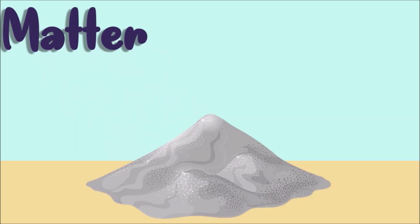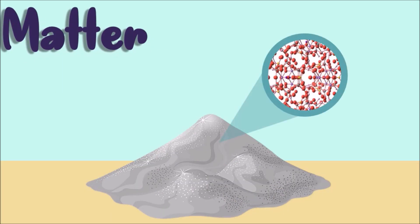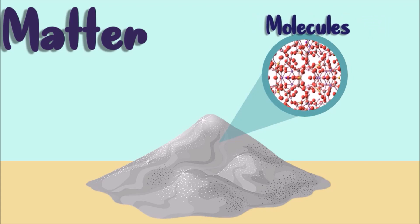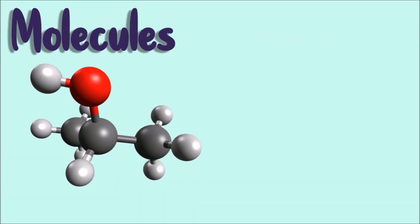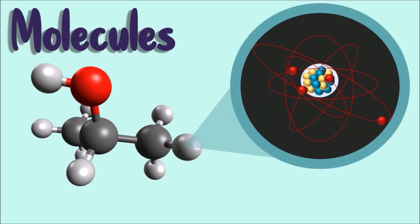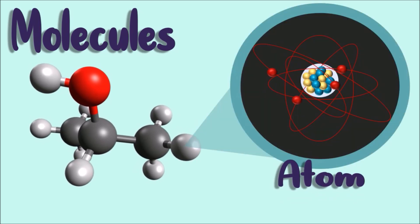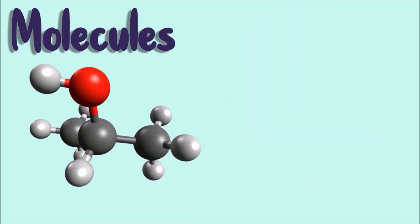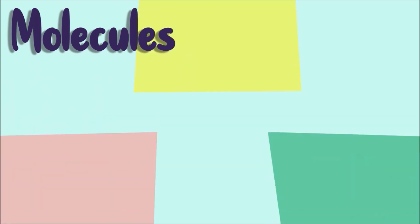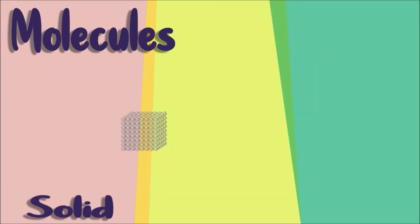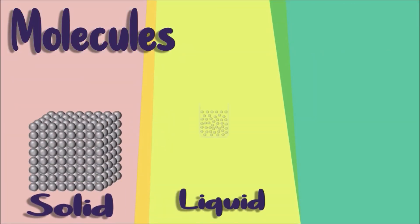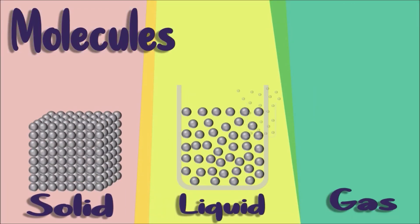Matter is made up of the smallest particle called a molecule. However, a molecule is made up of a particle called an atom. Molecules are arranged and behave differently in solid, liquid, and gas states.